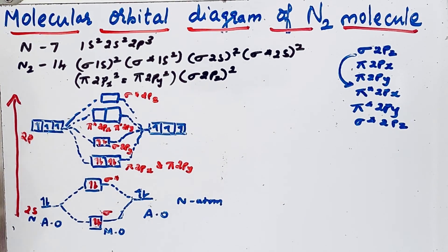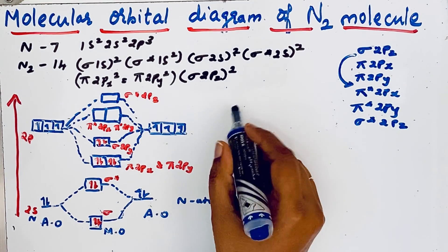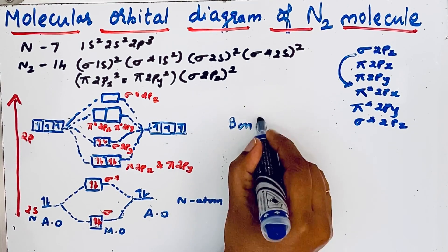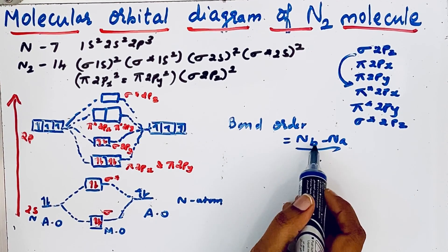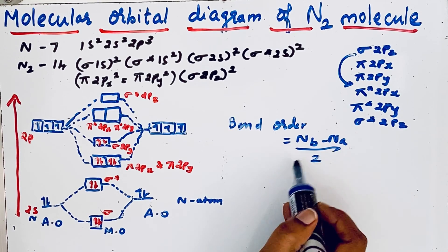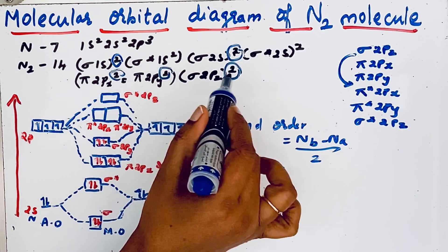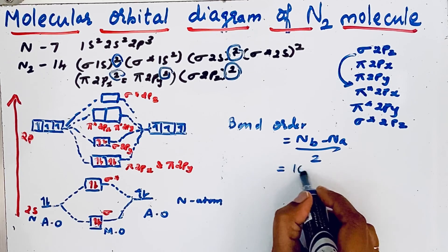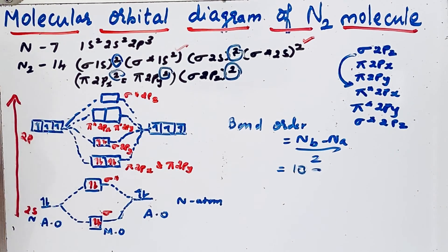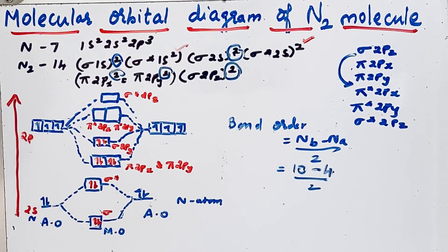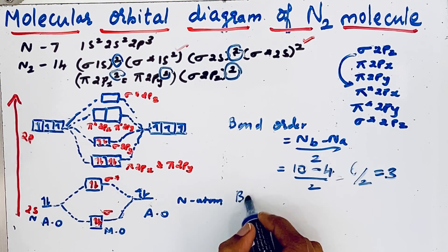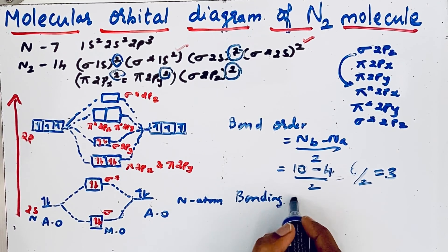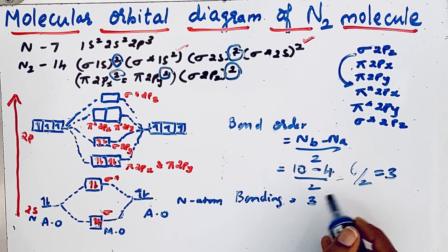From this we can find the bond order and the bonding in the nitrogen molecule. The formula for bond order is (Nb − Na) / 2, where Nb is the number of bonding electrons and Na is the number of anti-bonding electrons. The total bonding electrons are 10, and there are 4 anti-bonding electrons, giving (10 − 4) / 2 = 6 / 2 = 3. So there is a triple bond in the nitrogen molecule.